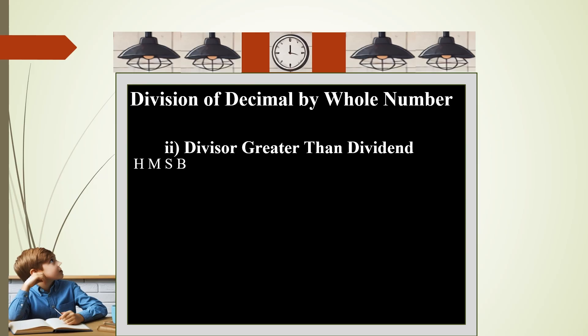Now let us take case 2: divisor greater than dividend. 0.75 divided by 3. Now the divisor is 3 and it is greater than 0.75. Arrange it as before and use the same principle, HMSB: how many times. Here it is 0.75, so you have to place the decimal above the dividend. 0 will remain 0. You place a decimal, and then 3 will go in 7 two times. So you have 7 minus 6, that is 1.